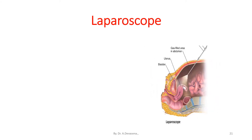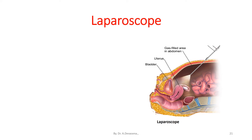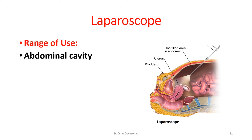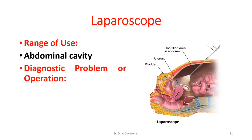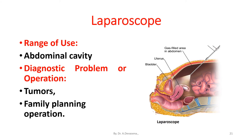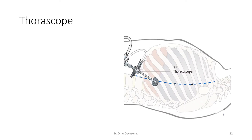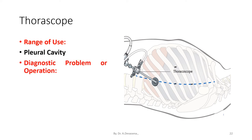Now we are viewing the laparoscope. Through the laparoscope we are viewing the bladder, uterus, and the gas-filled area in the abdomen. The range of use of the laparoscope includes the abdominal cavity. The diagnostic problems or operations done by the laparoscope include tumors and family planning operations. The laparoscope is also used for the pleural cavity, where diagnostic problems include tumors and air in the pleural cavity.